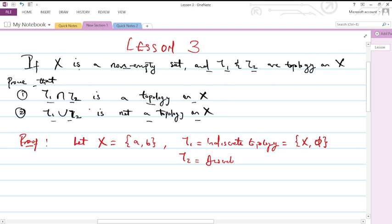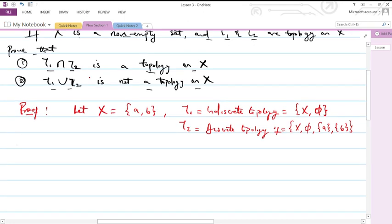And let T₂ be the discrete topology, that is a topology that contains all the subsets of X: X, empty set, set {a}, and set {b}. So these are all the subsets of X.